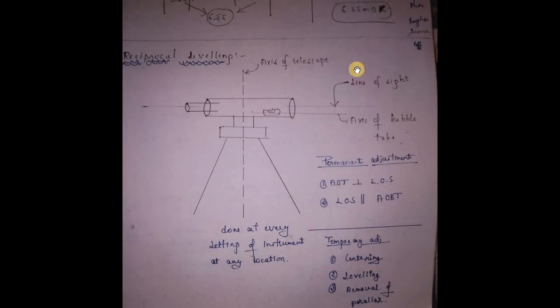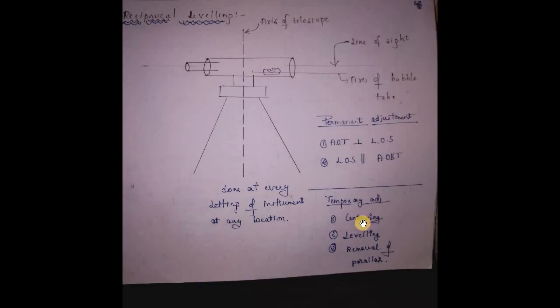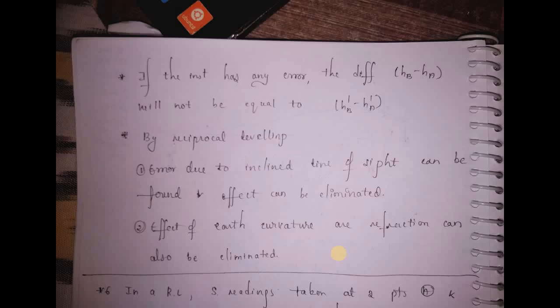The line of sight is parallel to the axis of the bubble tube. Temporary adjustment involves centering. Leveling is parallel to the telescope. Leveling is set to the circular level. If the instrument adjustment is done by reciprocal leveling, error due to inclined line of sight can be found and its effect can be eliminated.